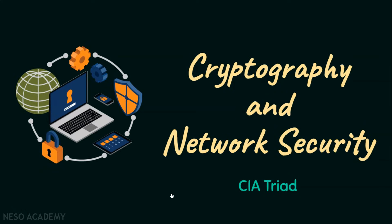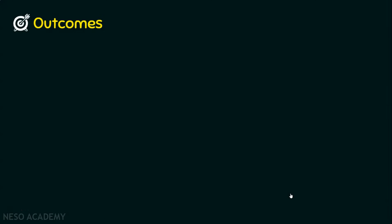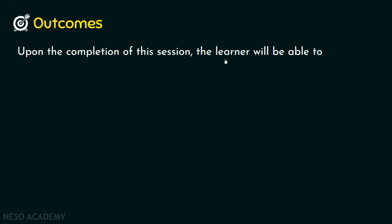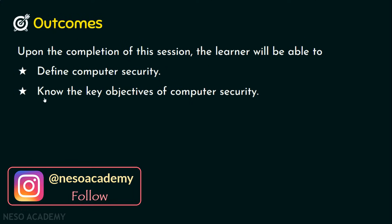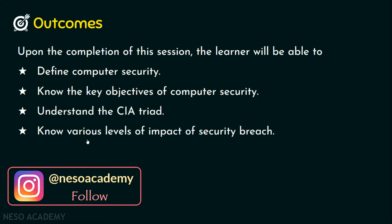Welcome everyone. In today's lecture, we will see the CIA Triad. We will start the session with the outcomes. Upon completion of this session, the learner will be able to: define computer security, know the key objectives of computer security, understand the CIA Triad, and know various levels of impact of security breach.